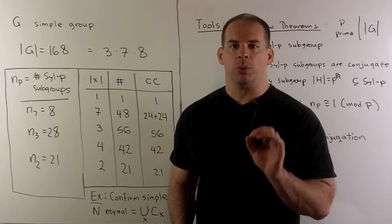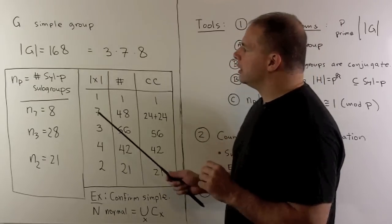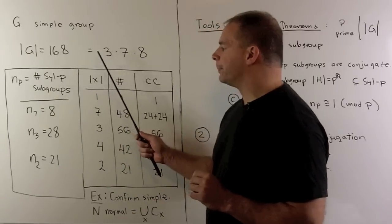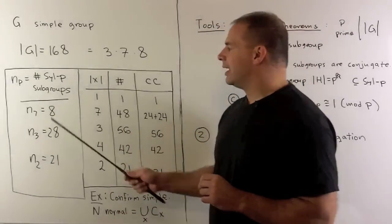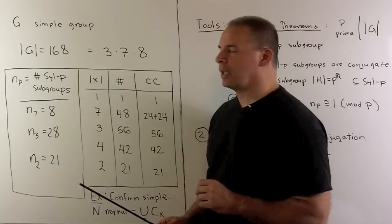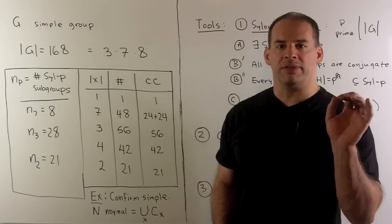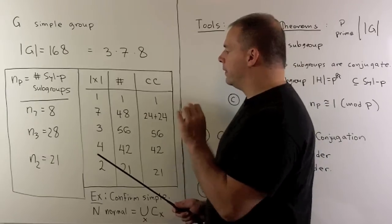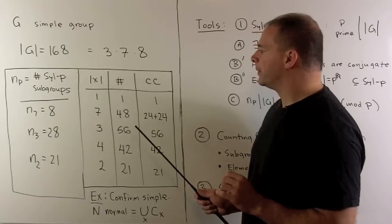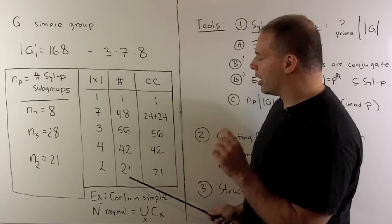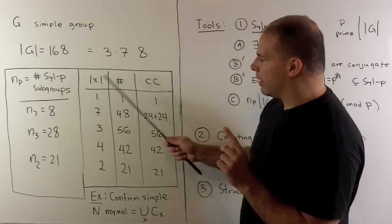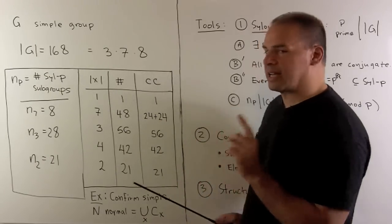Now, the results we want to get to. I want the number of Sylow P subgroups for each prime that divides 168. So we'll have n sub 7 is 8, n sub 3 is 28, n sub 2 is 21. Then I want to consider elements of a given order. So, the orders that can arise are going to be 1, 2, 3, 4, and 7. We have the numbers of each element of a given order, and then we'll have how each set of elements of a given order breaks up into conjugacy classes.